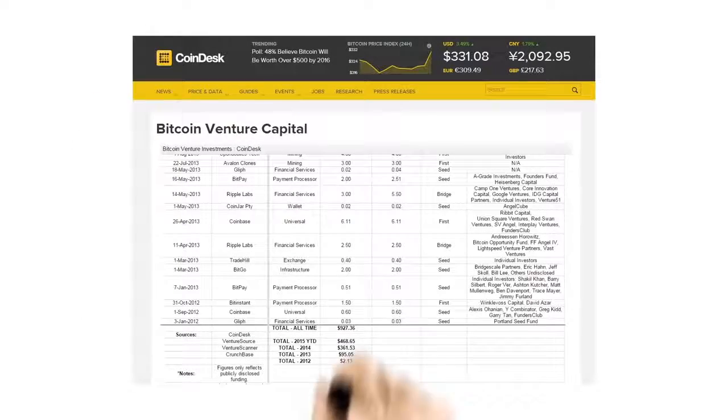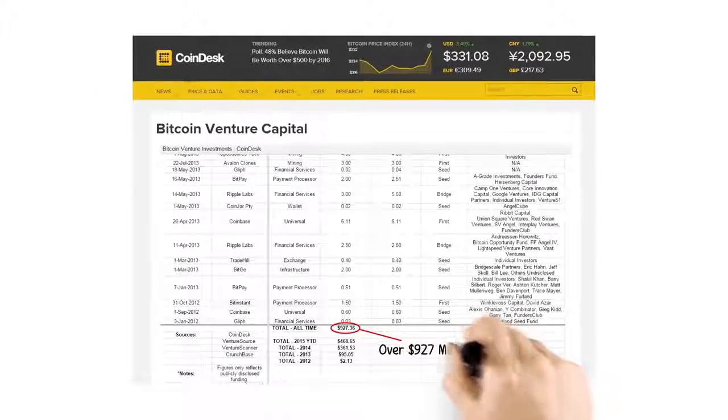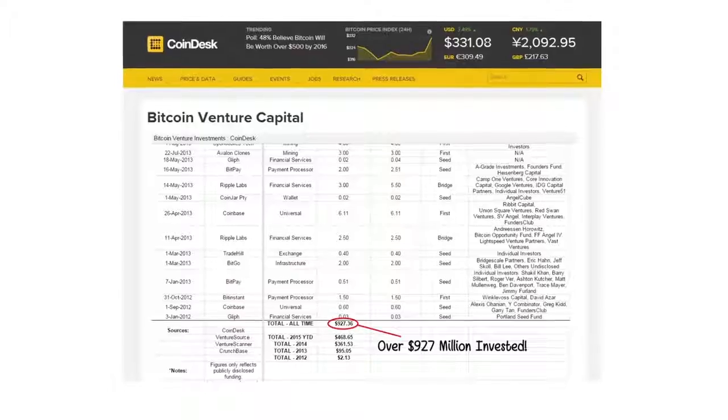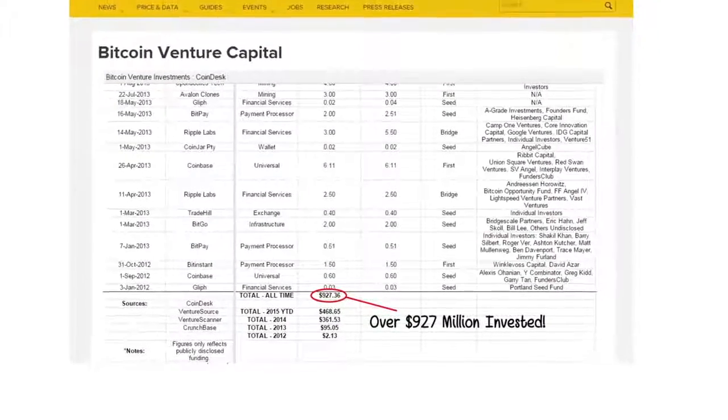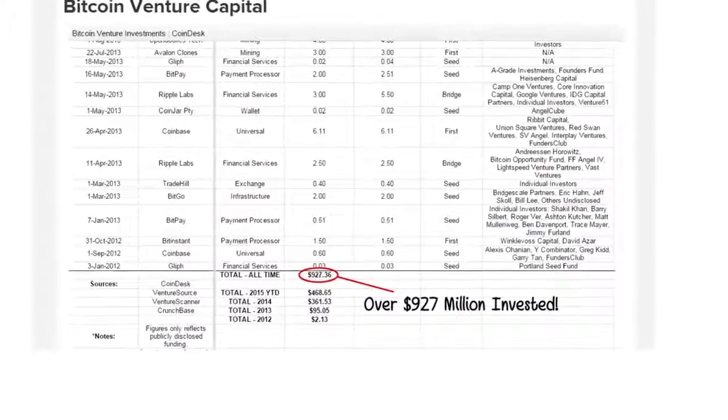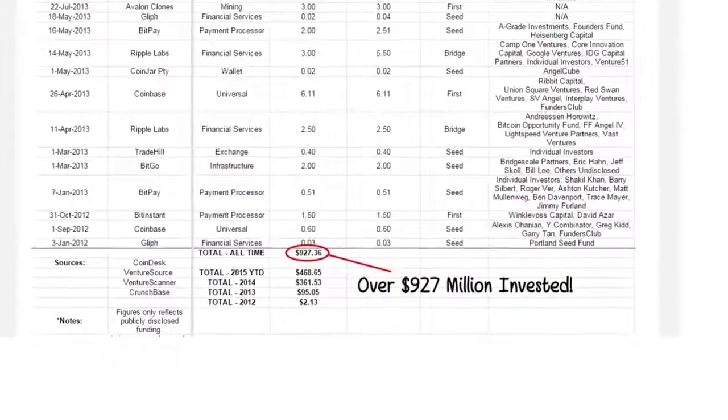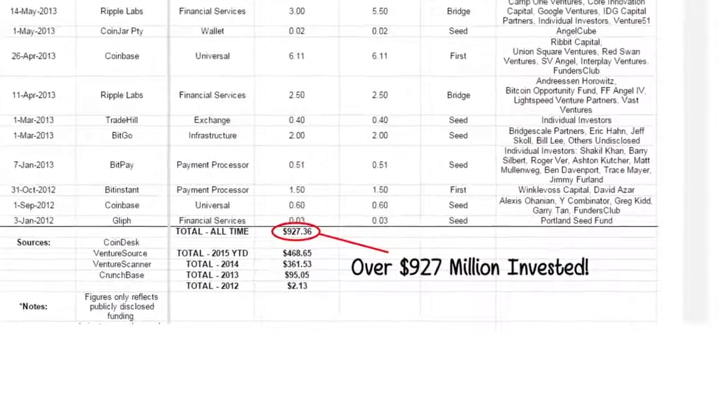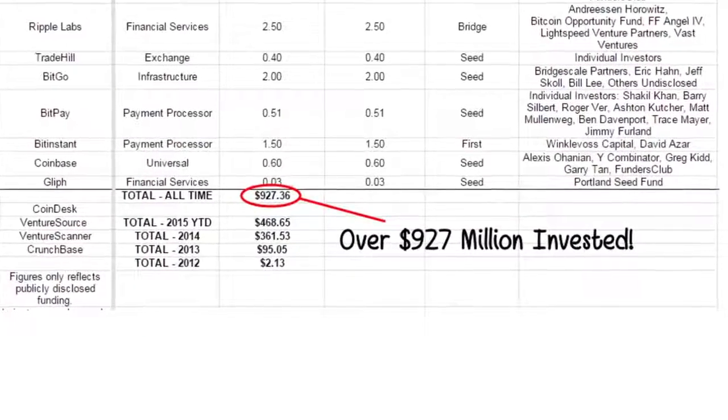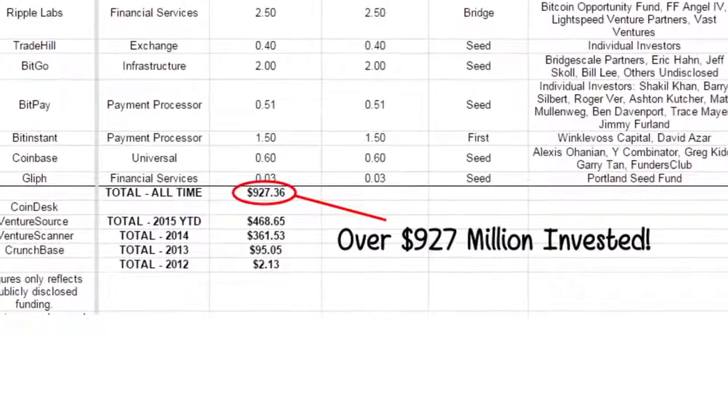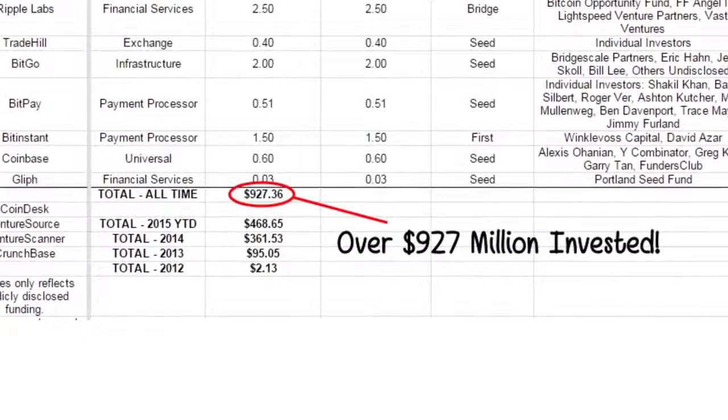In the past few years, hundreds of millions of dollars has been invested in Bitcoin startup companies. In 2012, about $2 million was invested. In 2013, $95 million. In 2014, $361 million and through September 2015, already $456 million has been invested. That is over $900 million in the past three years.